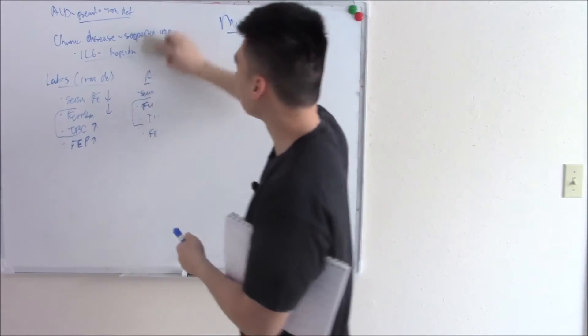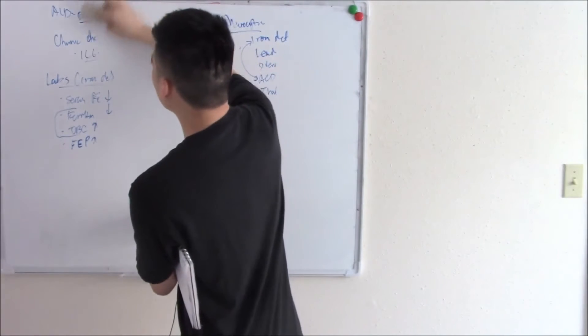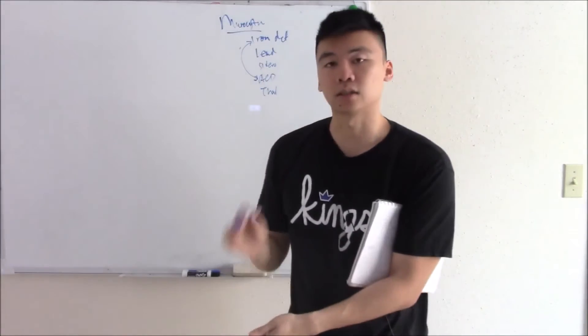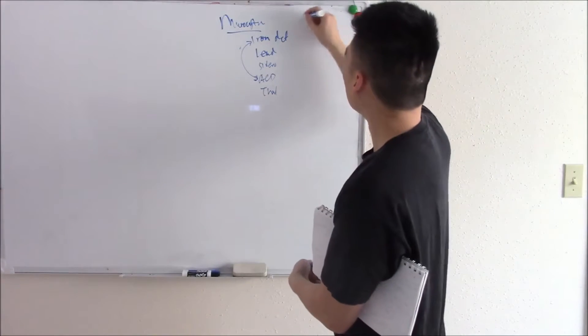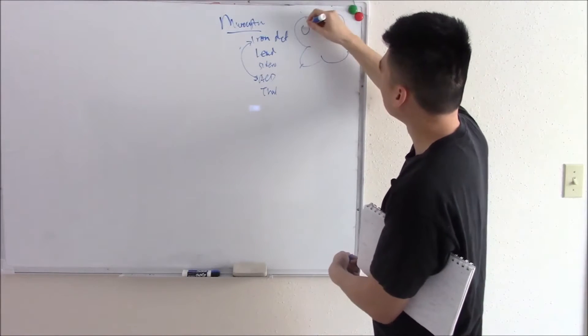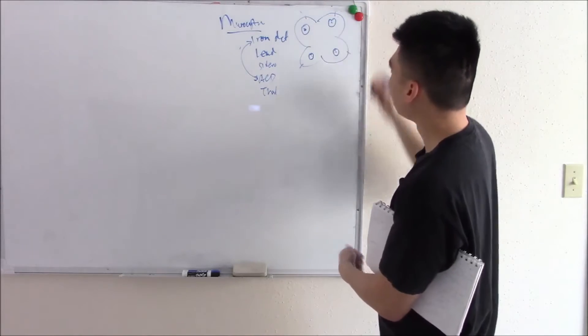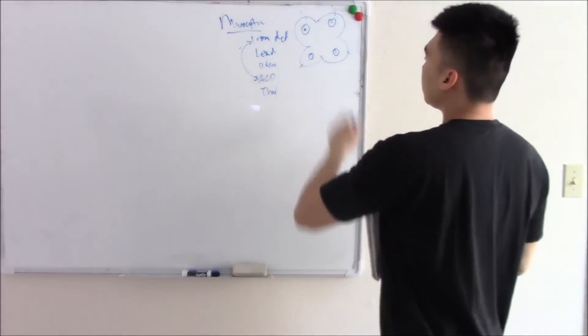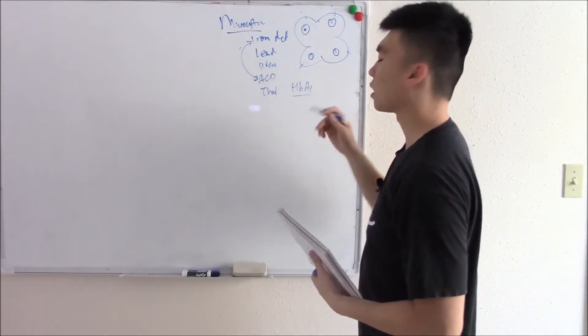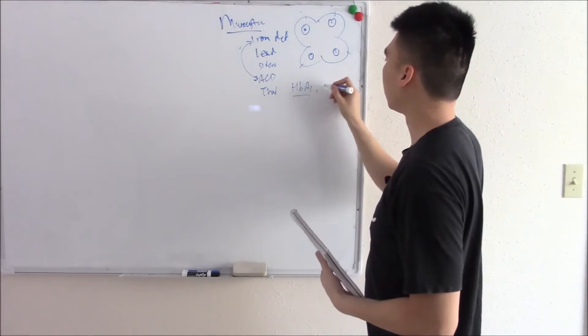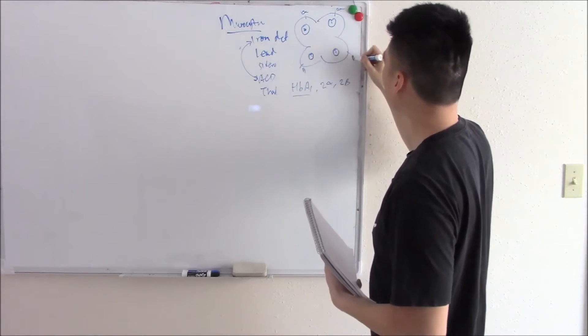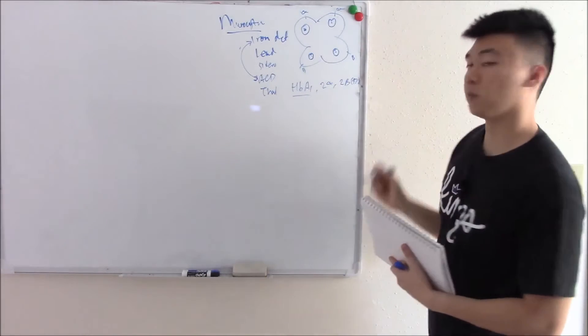Let's move on to thalassemia. Thalassemia is a problem in producing globin. We talked about how blood is made out of hemoglobin: heme and globin. Let's draw your hemoglobin. It's made up of four globin chains and then heme with iron in the center. In adults what is our predominant hemoglobin? It'd be HbA1. And what globin chains make up HbA1? That'd be 2-alpha and 2-beta. And that makes up about 97% of our hemoglobin.